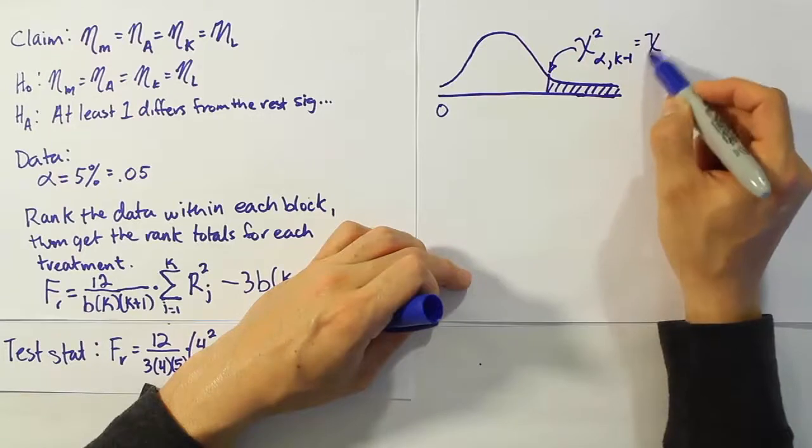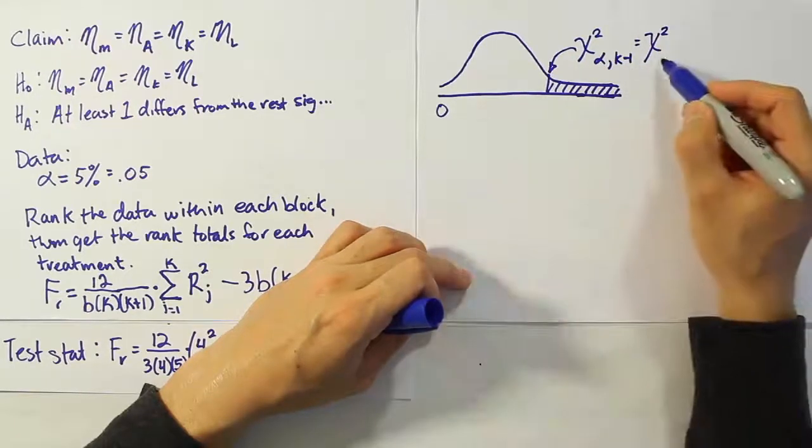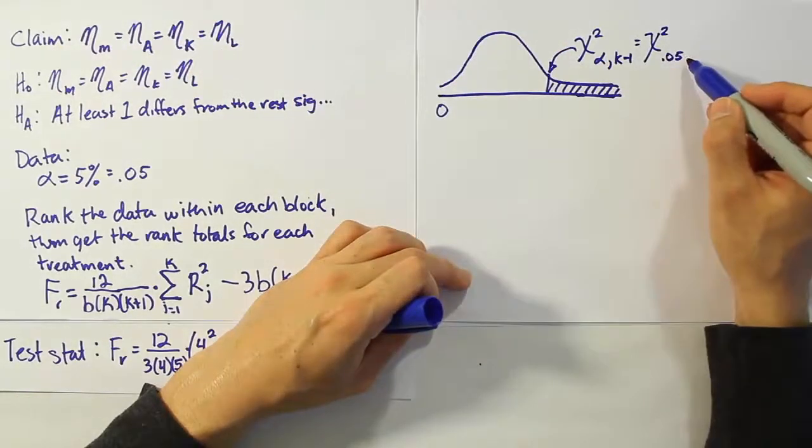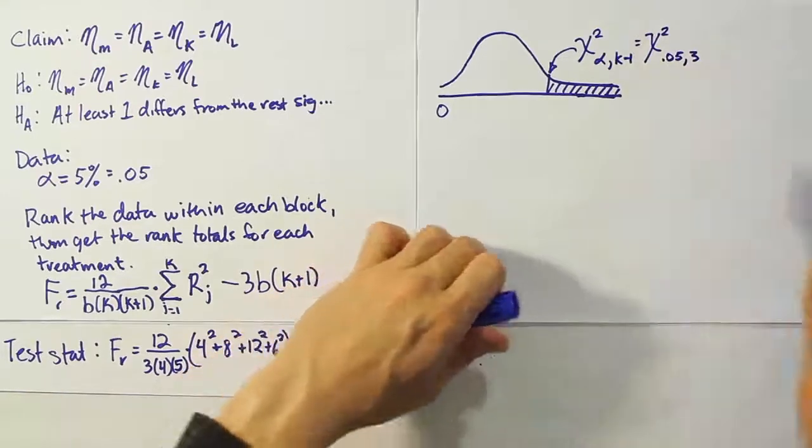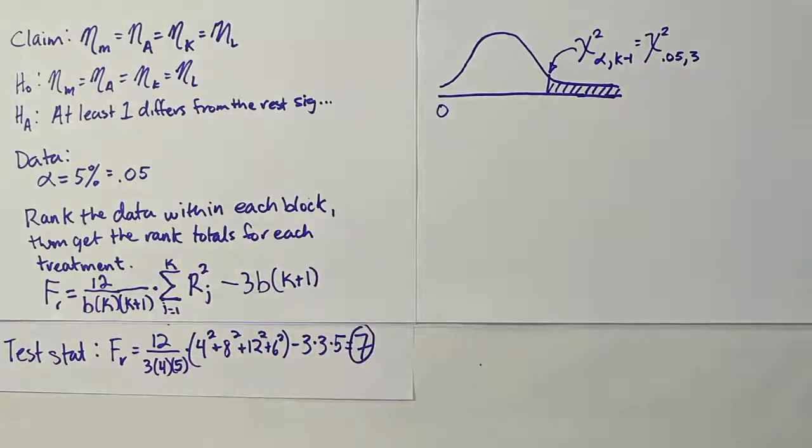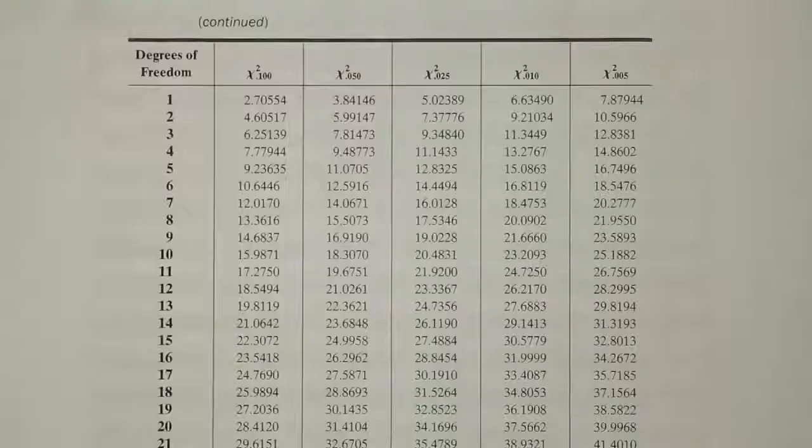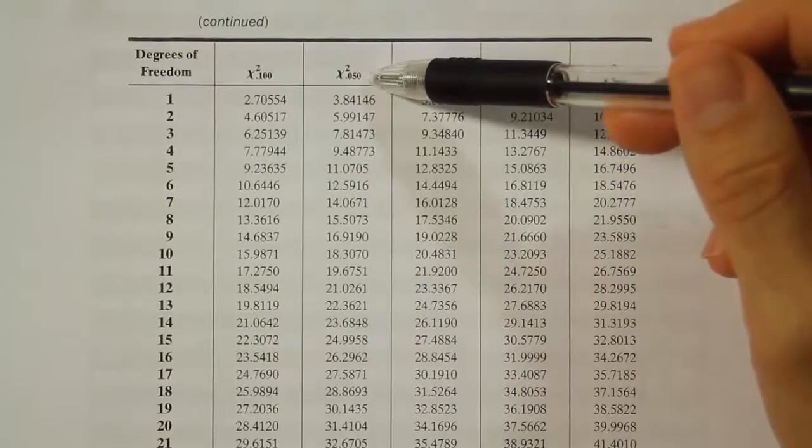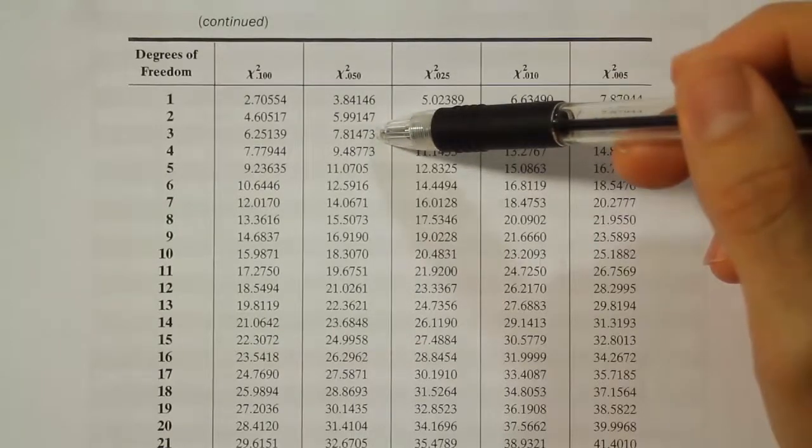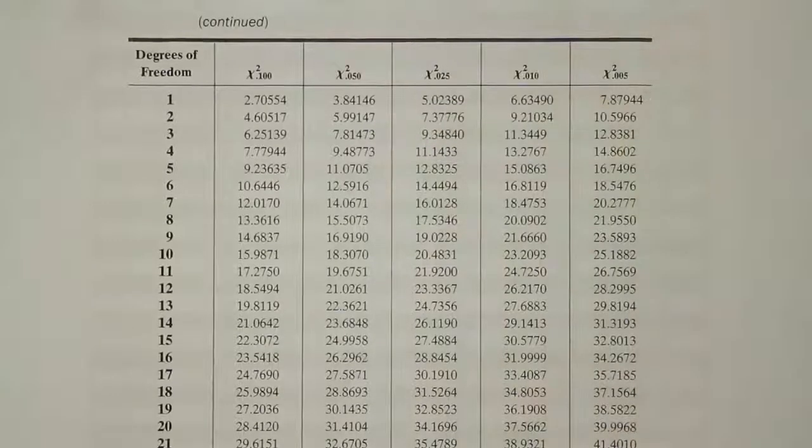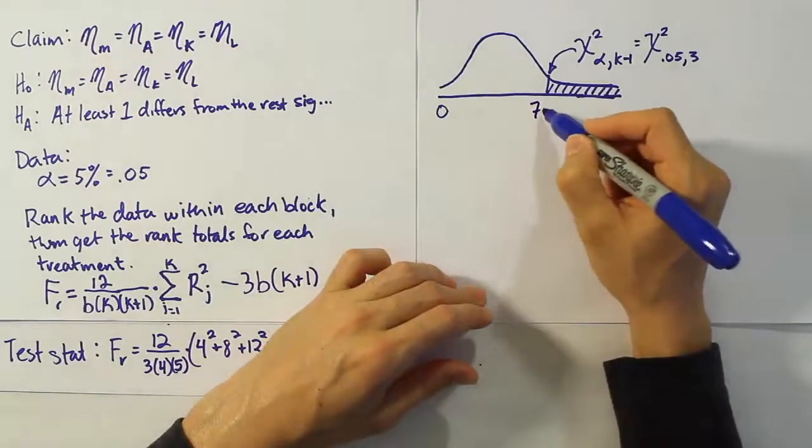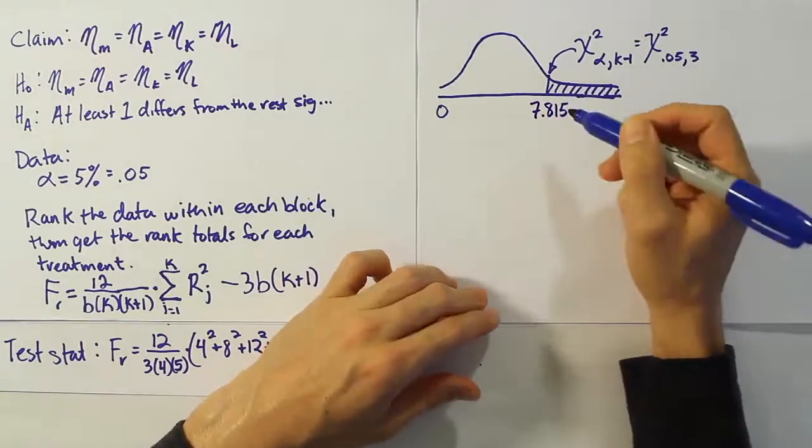Now in our particular problem, the alpha is five percent. The number of treatments we had were four, so take away one, and we will have three as our degrees of freedom. Okay, so now let's go to our table, our chi-squared table, and look up 0.05 with three degrees of freedom. So we're on the chi-squared table looking up 0.05, going down to three degrees of freedom. We get the answer 7.81473. So our value turned out to be 7.815.